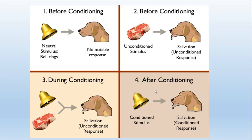Now we will talk about the bell. The bell has nothing to do with the meat. If you ring the bell, the dog will hear it, but it doesn't have anything to do with the meat, so there is no notable response. The bell is something neutral — we call it a neutral stimulus. During conditioning, every time you present the meat to the dog, you also ring the bell. You do that over a long period of time, such as every day for six months.